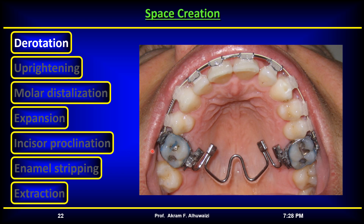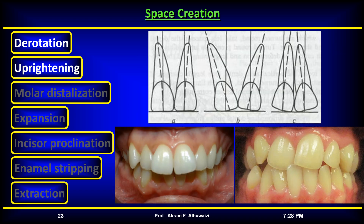This is why you frequently see appliances to de-rotate molars early in treatment. Uprightening incisors also creates space, because mesially tipped or distally tipped incisors take up more space than upright ones.